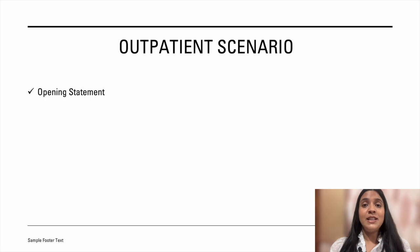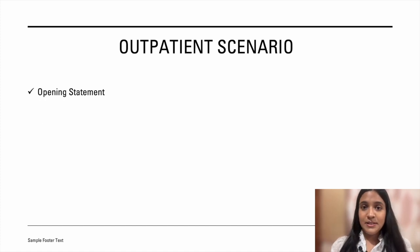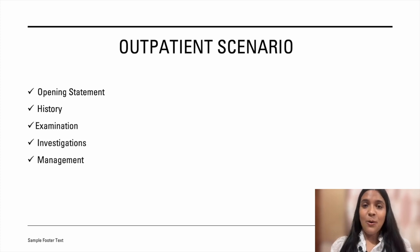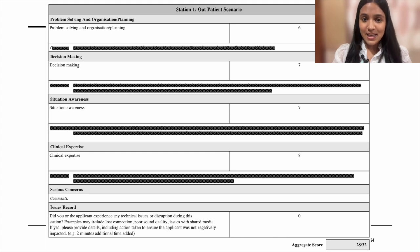You would start by describing the setting — for example, you would say: 'I would like to assess this patient in a one-stop hematuria clinic where the facility for flexible cystoscopy is available.' Then you would go through the history, examination, investigations, and outline a management plan. The interviewers are assessing your problem solving, organization skills, planning, decision making, situational awareness, and clinical expertise.